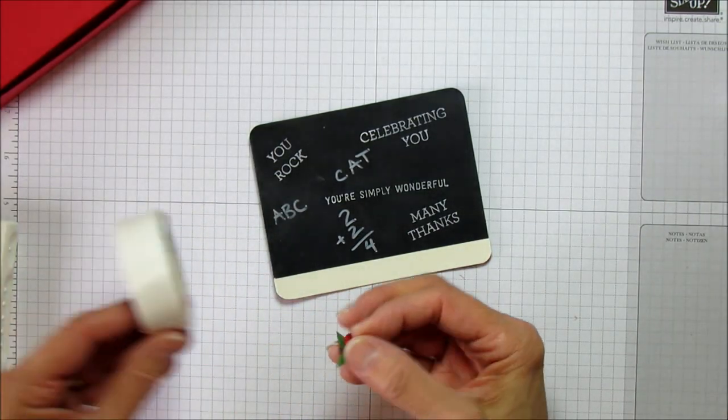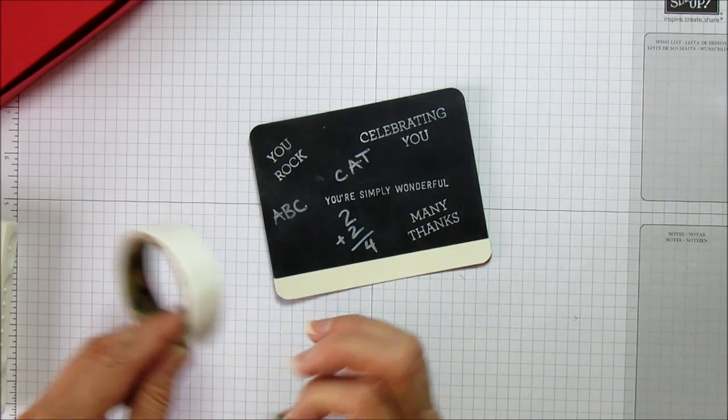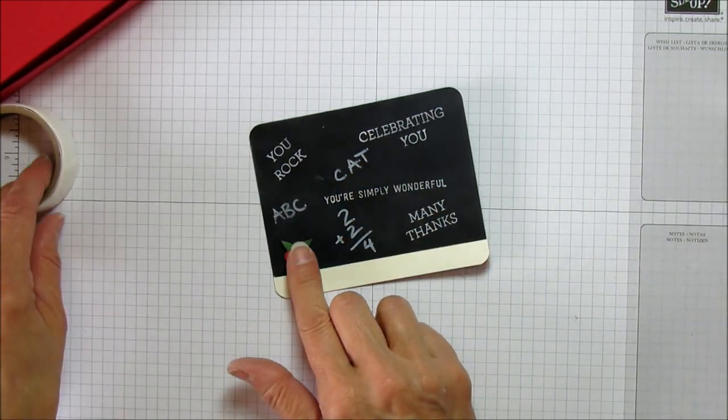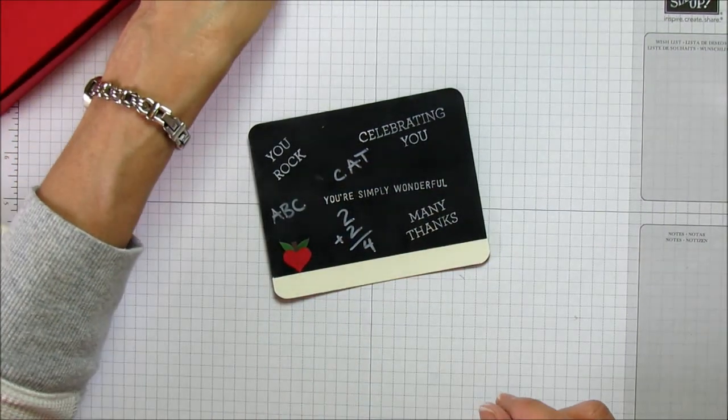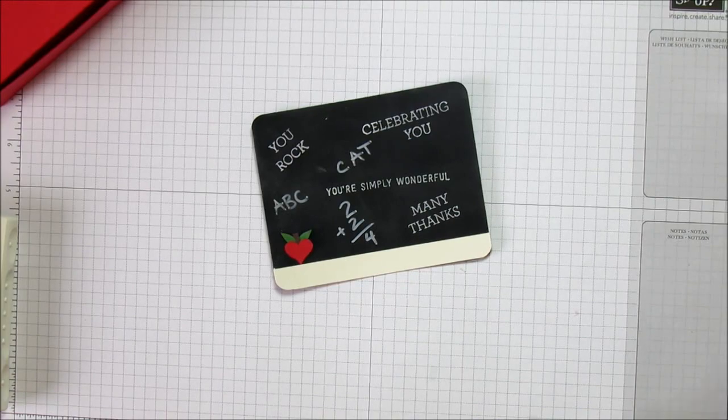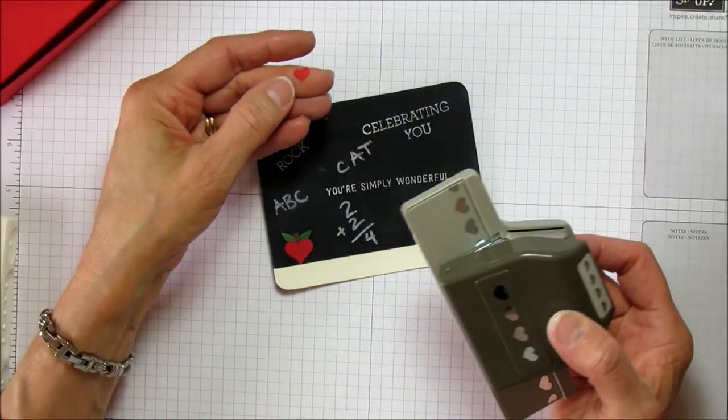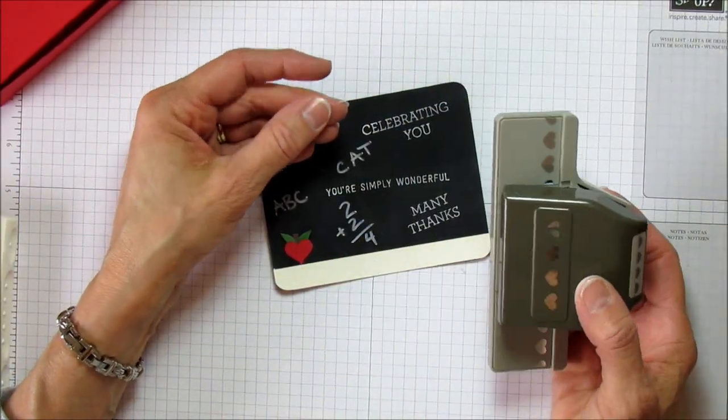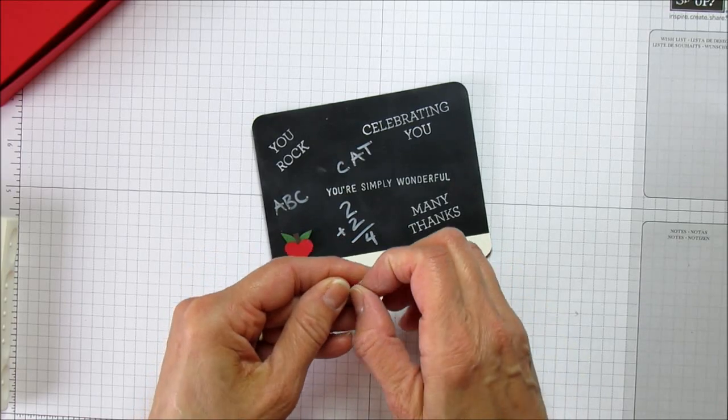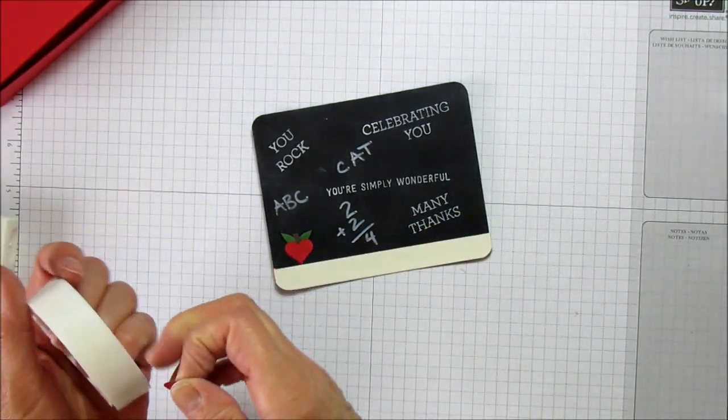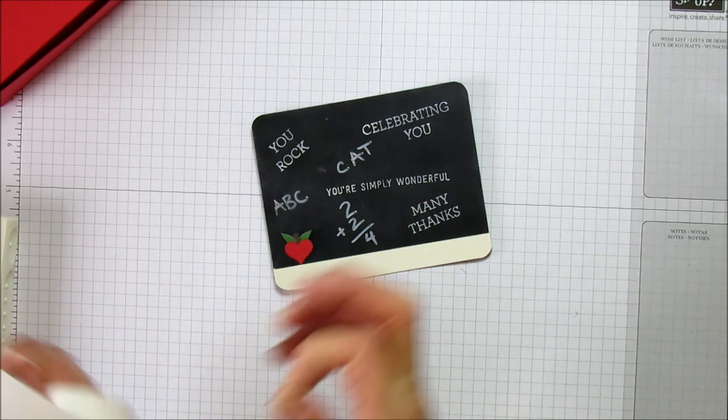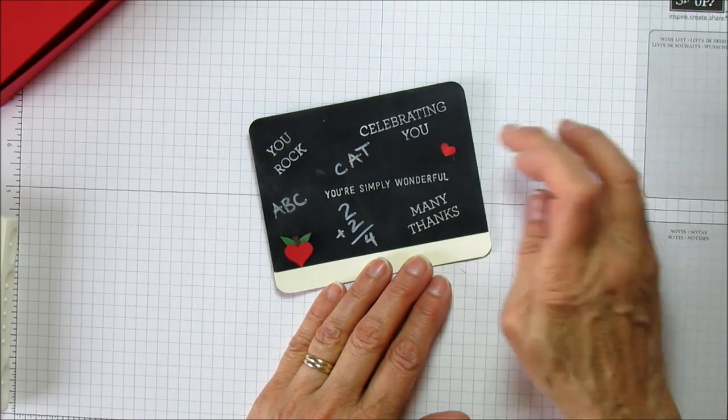I'm going to stick a glue dot on the back of that and add that right there. Then we have a heart punch, it's a border punch. I have these left over from when I made a Valentine's card, so I'm going to use one of those little hearts.